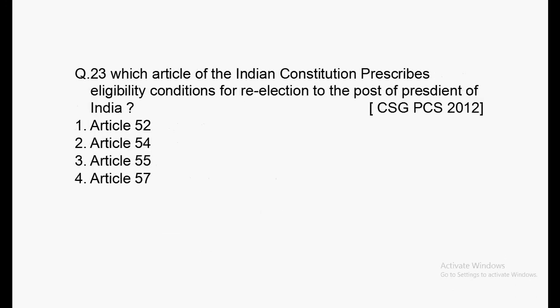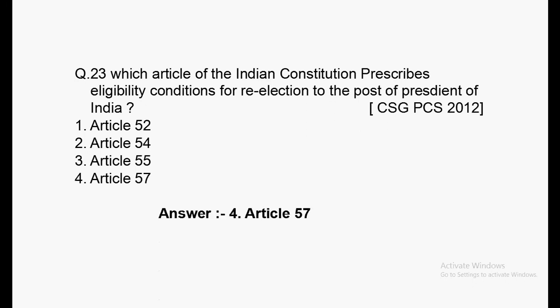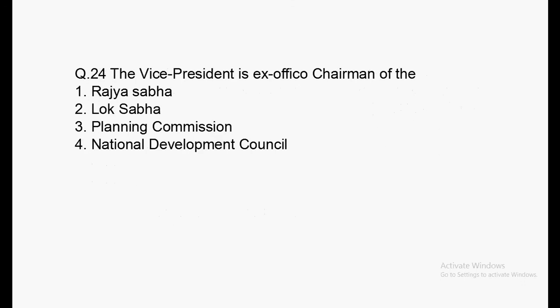Next question: Which article of the Indian Constitution prescribes eligibility conditions for re-election to the post of President of India? Options: Article 52, Article 54, Article 55, Article 57. Asked in Jharkhand PCS 2012. Answer: Article 57 is correct.